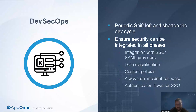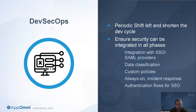SSPM also helps you shift left in your development cycle and maintain enterprise-level quality by leveraging DevSecOps practices for your SaaS platforms. Our platform delivers automation and continuous monitoring and assists communication between teams. It helps ensure that your teams respond to threats efficiently and at scale as SaaS application adoption continues to grow. It allows you to integrate with your SIEM providers, provide data classification, allow you to establish custom policies, always have incident response, and establish authentication flows for your SSL.